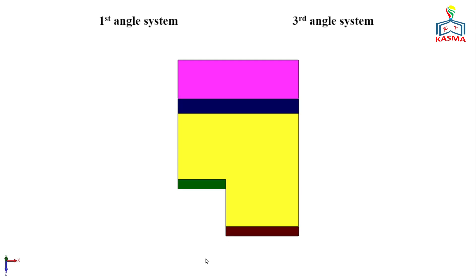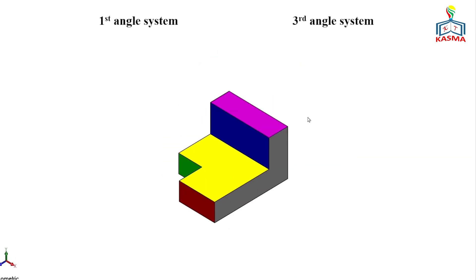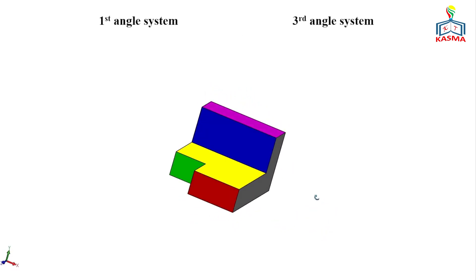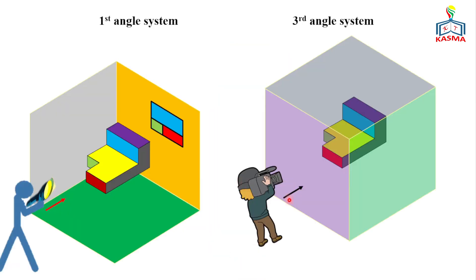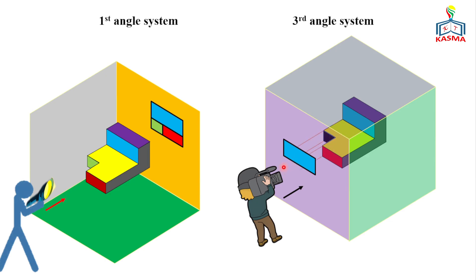Now let's project using the third angle projection system. Here we use the camera system — we trace the object's layout or contour on the plane, where the plane is between the cameraman and the object. The front views in the first and third angle systems are the same. Each surface is projected the same way, constructing the front view in both systems.